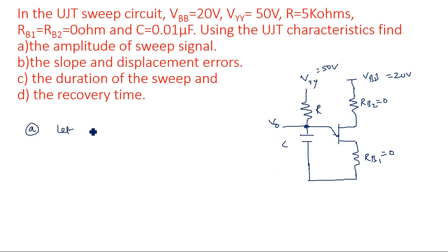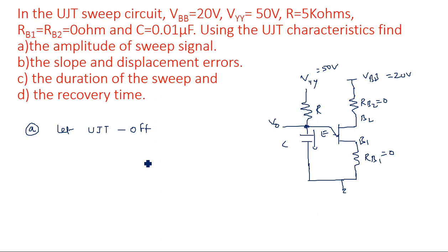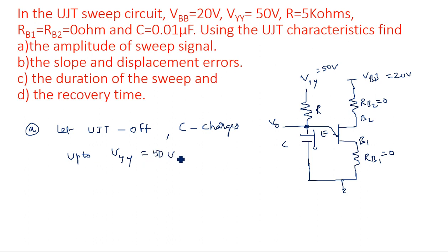Initially, let us assume the UJT is in the off state. Since the capacitor has no initial voltage across it, the transistor is in the off state. What happens is the capacitor charges through current flowing from Vyy through R to the capacitor. So capacitor C charges up to a maximum of 50 volts, which is Vyy.